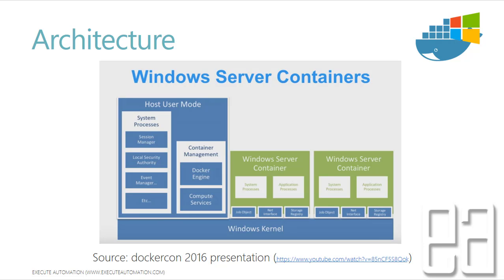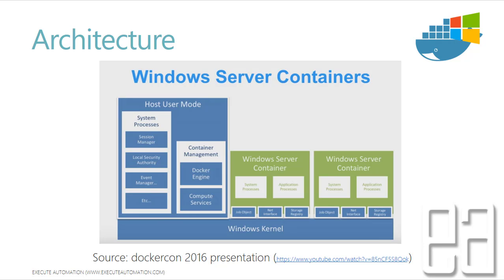The architecture of the Windows Server container looks like this — this is a screenshot I took from the DockerCon 2016 presentation by the Microsoft team. You can see there is a blue box representing the Windows kernel — your Server 2016 kernel. Inside the Windows Server container there are system processes, application processes, job objects, net interface, storage registry, and all these are present for each container. On the left side is the host user mode, containing system processes and container management. Under container management you have the Docker engine and compute service.